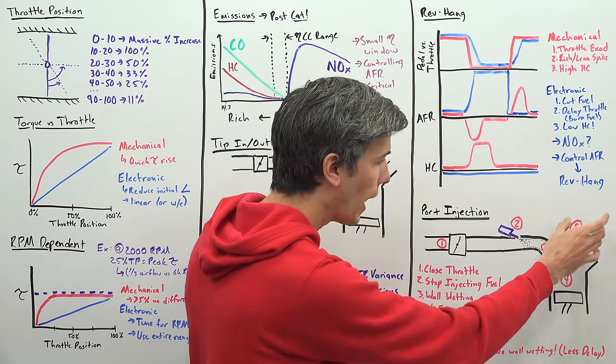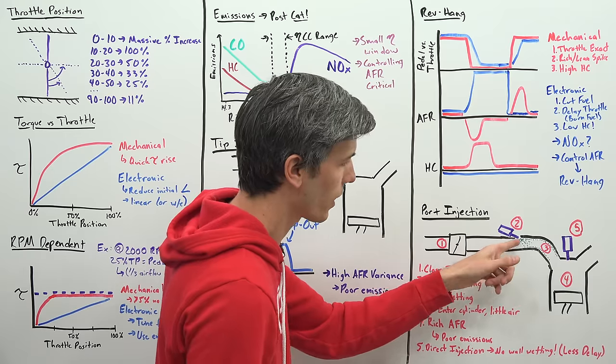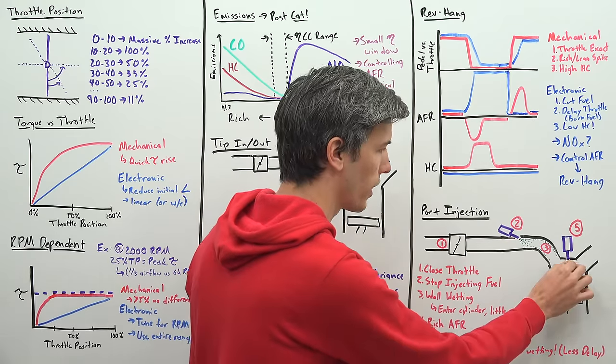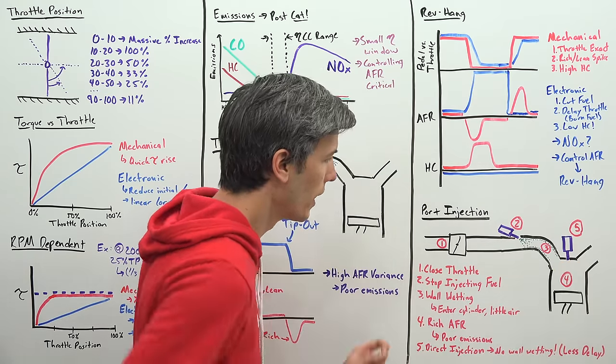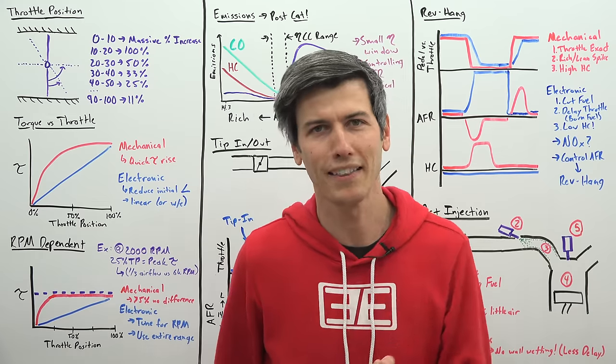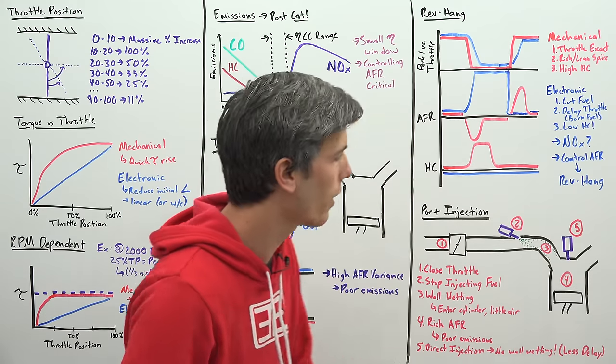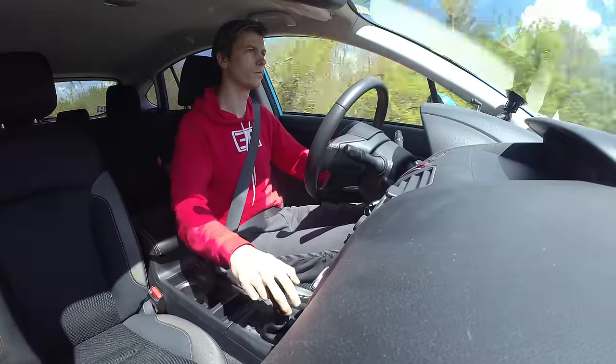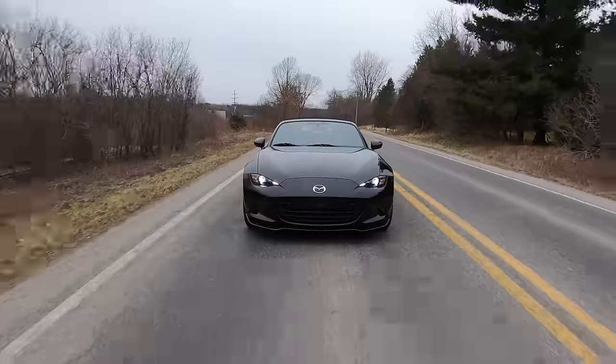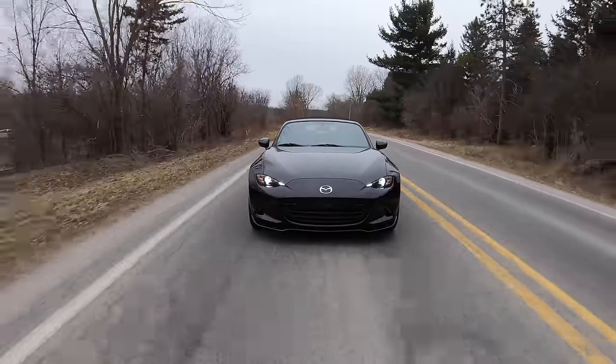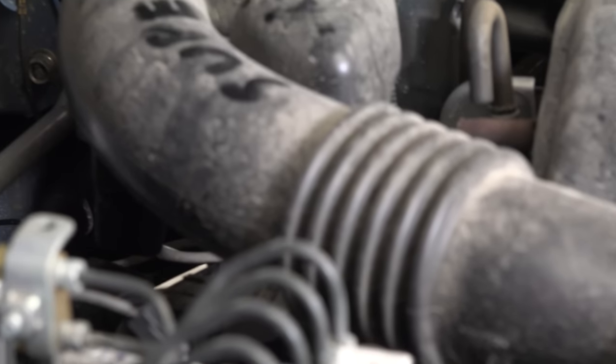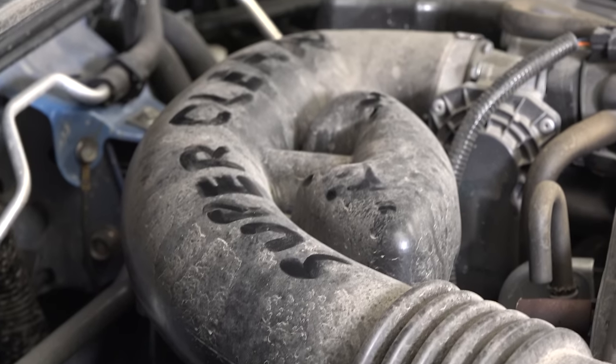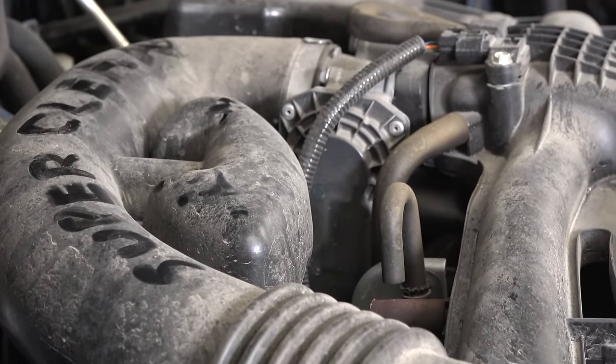Now, of course, direct injection won't have this problem because it's not injecting into those intake port walls, it's injecting directly into the cylinder. And that doesn't necessarily mean that direct injection engines won't have rev hang. There's still reasons why it can exist. But between my two personal vehicles, my Subaru Crosstrek and my Mazda MX-5, which has direct injection, the Subaru Crosstrek, which has port injection, has significantly more rev hang.